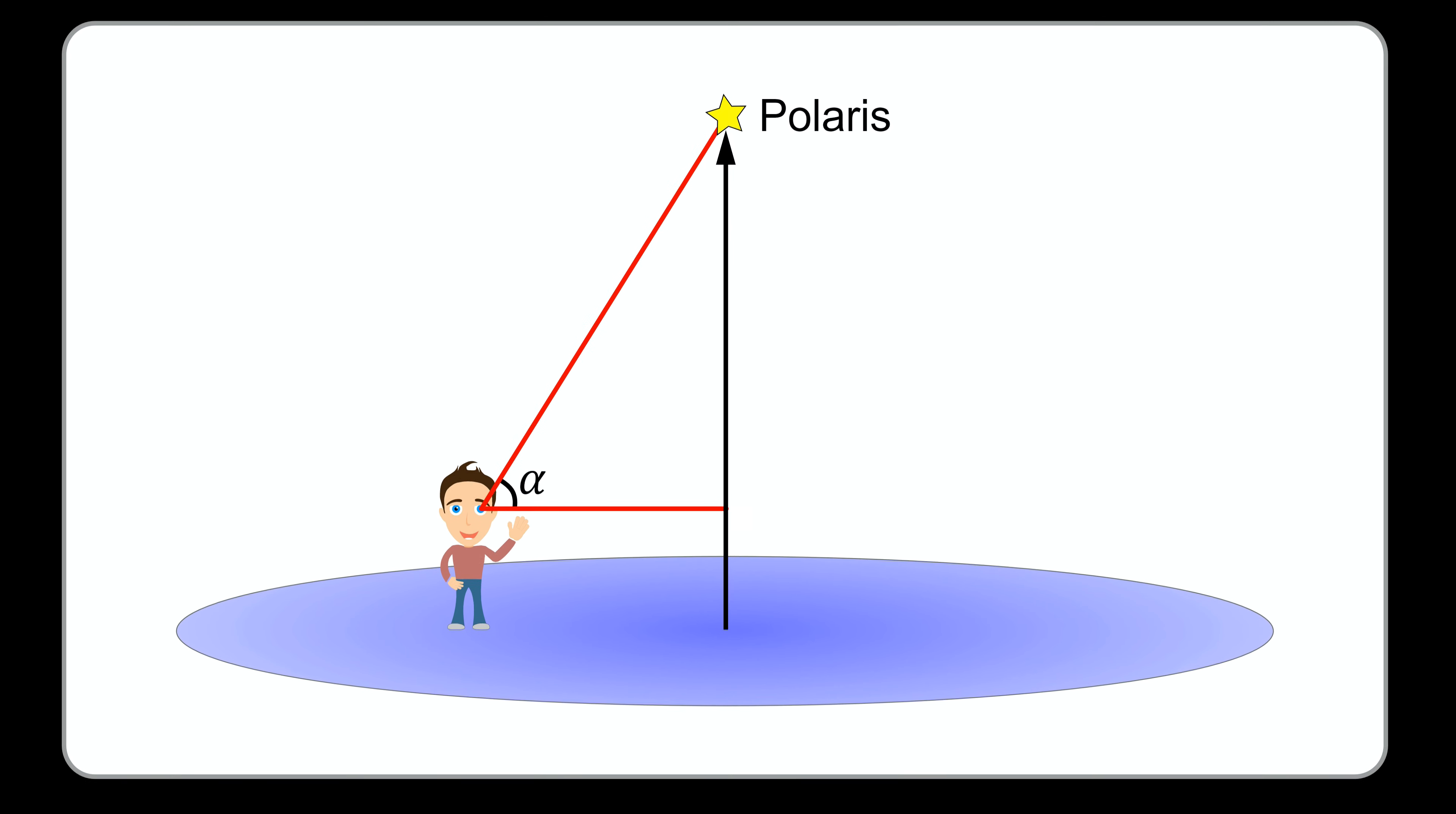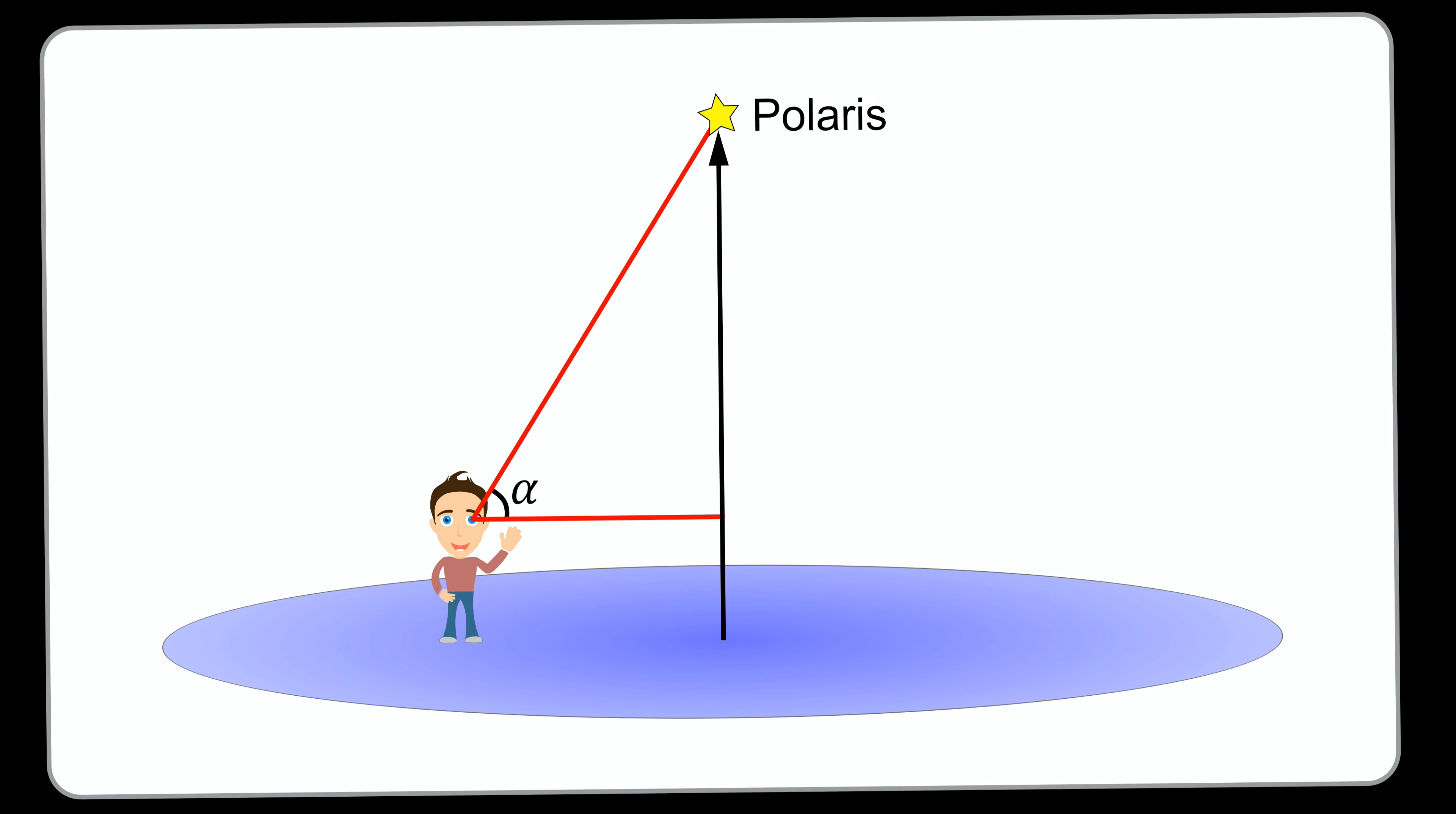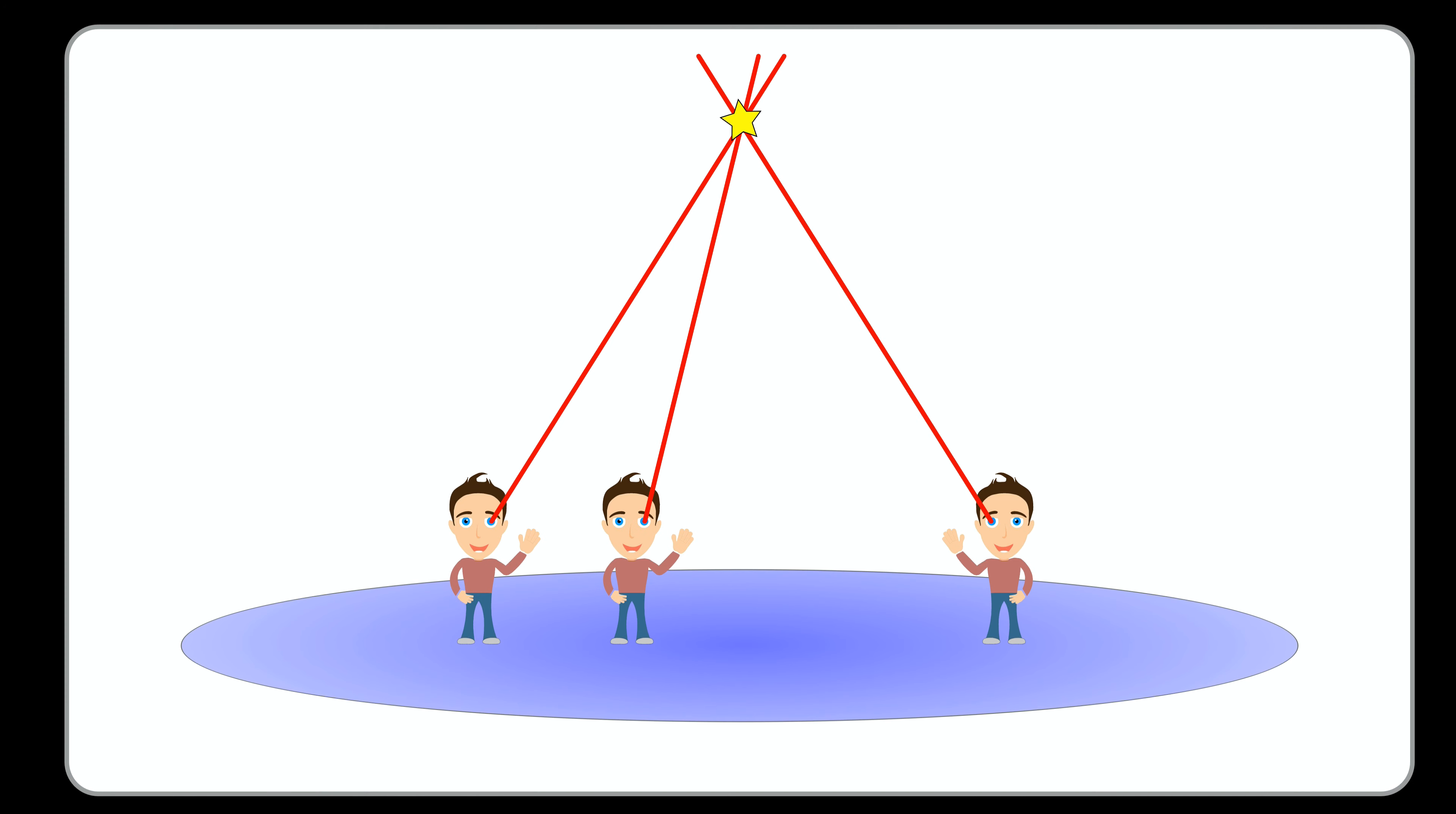On a flat Earth model, this means Polaris would have to be above the North Pole, and we can measure the angle up to it. All such measurements, taken at different places on Earth, should hit the same single point.